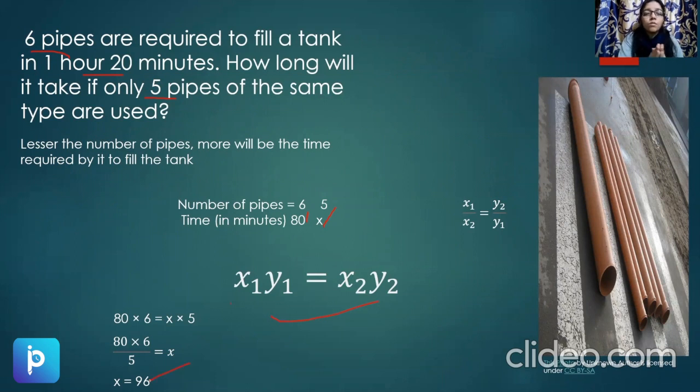So this was the inverse proportion, like if one quantity is increased, the other decreases. So this was the basic of direct and inverse proportion. Direct is if one quantity is increased, the other also increases. And inverse is if one quantity is increased, the other decreases. More to it in detail, we'll be discussing it in the next lecture. Till then, have a nice day.